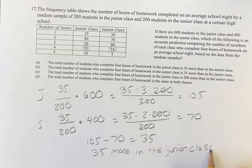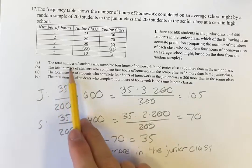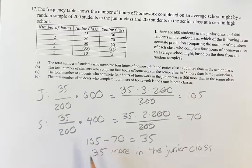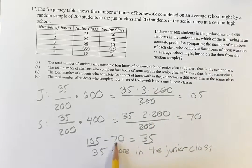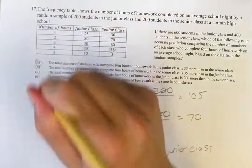Which of these answers does that line up with? Well, that's going to line up with A. The total number of students who complete four hours of homework in the junior class is 35 more than in the senior class. So that's going to be your answer, A.